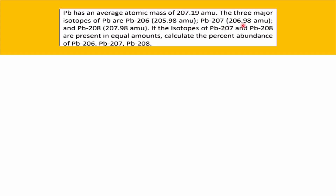Plumbum-207, with its isotopic mass of 206.98 amu, and Plumbum-208, with its isotopic mass of 207.98 amu. If the isotopes of Plumbum-207 and Plumbum-208 are present in equal amounts, calculate the percent abundance of Plumbum-206, Plumbum-207, and Plumbum-208.